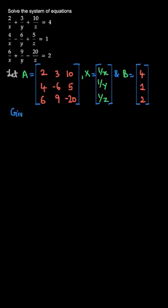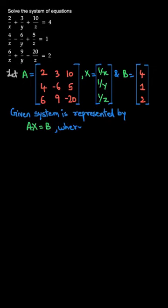Further, we can write AX equal to B. Yes, that is what we want. The given system can be represented by AX equals B, and this is possible only if X is such.